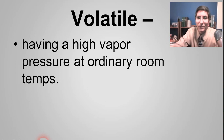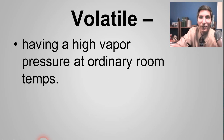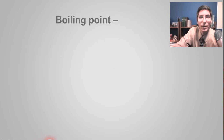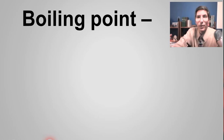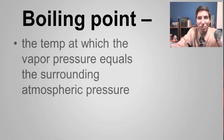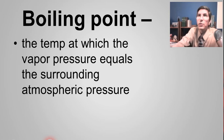Some things have a low vapor pressure and so they're not very volatile. Things like mercury have a relatively low vapor pressure. Now, the boiling point — we talked about that in the last video. We can actually measure what it means precisely: the boiling point is the temperature at which the vapor pressure of a liquid equals the surrounding atmospheric pressure.